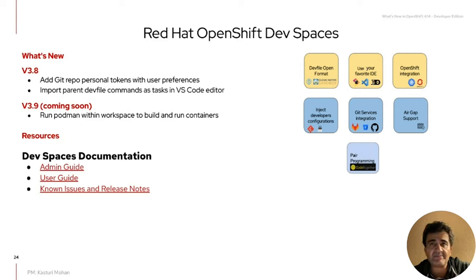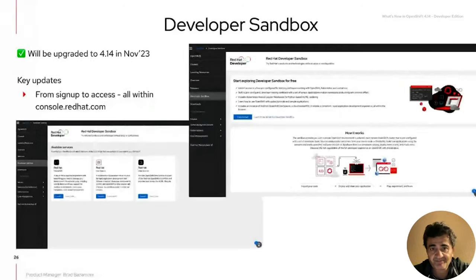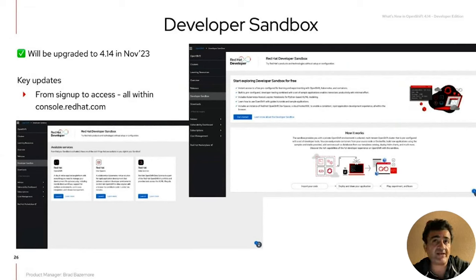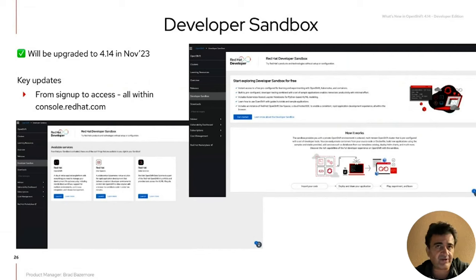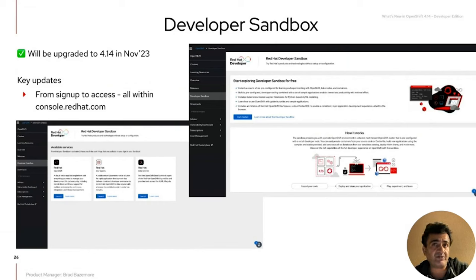There are admin guides, user guides, and all the documentation around version 3.8 at the links below. Let's also talk about the Dev Sandbox for OpenShift. The major enhancement we've made is around console.redhat.com. In the past, there was a landing page for Developer Sandbox in console.redhat.com, but signing up would take you to the developers.redhat.com page. From now on, the entire sign-up-to-access experience is self-contained within the console.redhat.com landing page — you discover it, learn about it, click a button, and get provisioned right there.